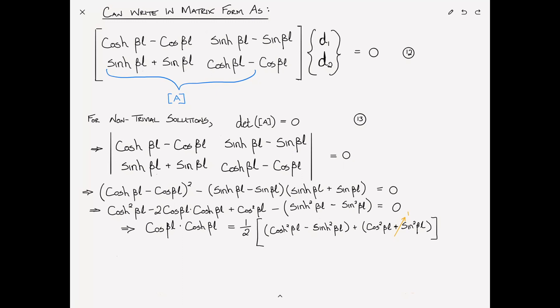What about cosh² - sinh²? Anyone know? Anyone got this on your cheat sheet? That's also an identity. That's equal to one. So both of those are equal to one. So really, what's in those square brackets is just equal to two. So that is equal to a half times two, which means that cosine βL times cosh βL = 1. And that is the frequency equation.